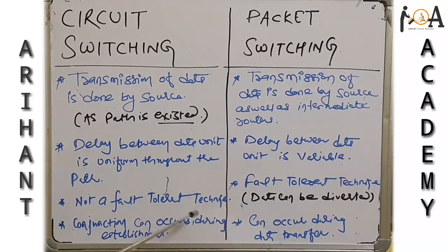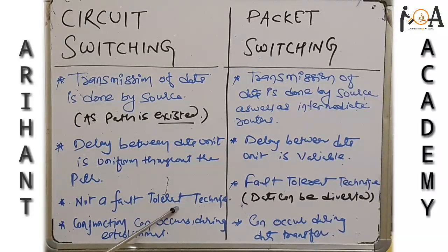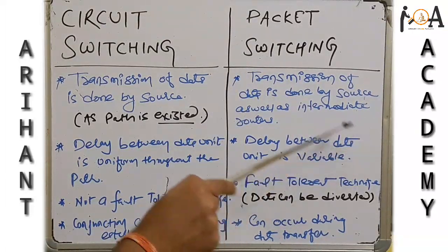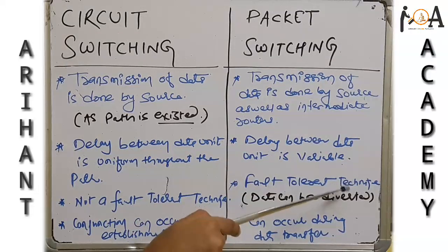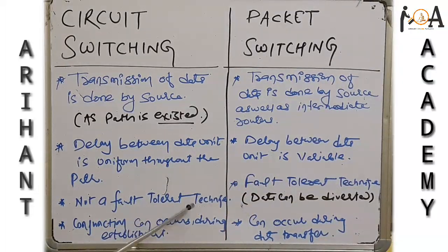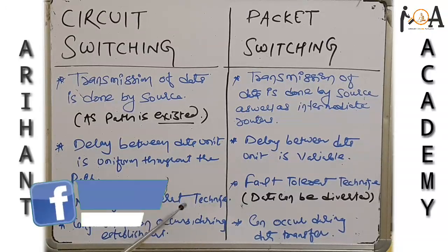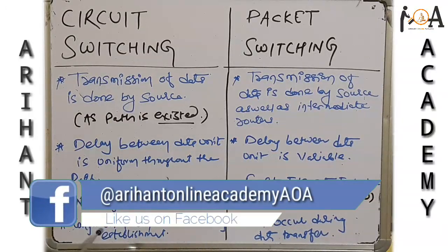Circuit switching is not a fault-tolerant technique, because data must follow a fixed path. Whereas packet switching is a fault-tolerant technique, because data can be diverted through alternative paths — no fixed path is required, so if one route fails the data can still reach the destination.